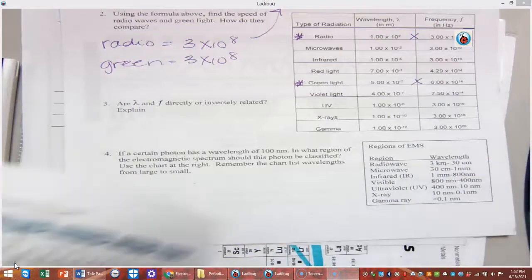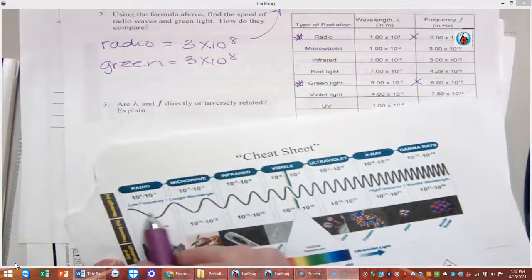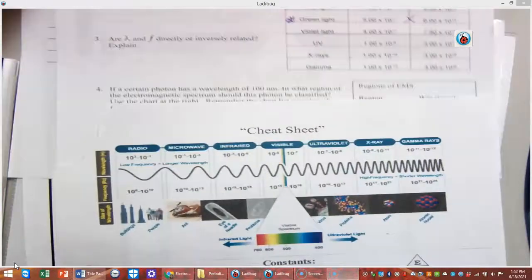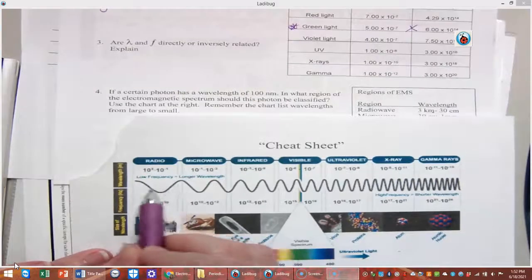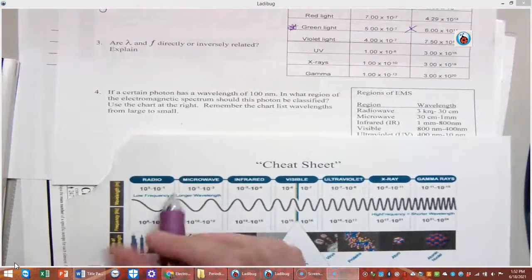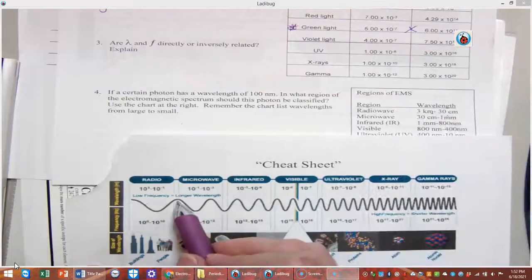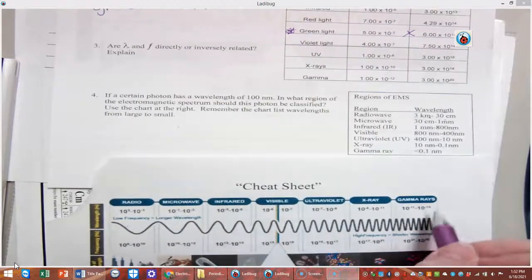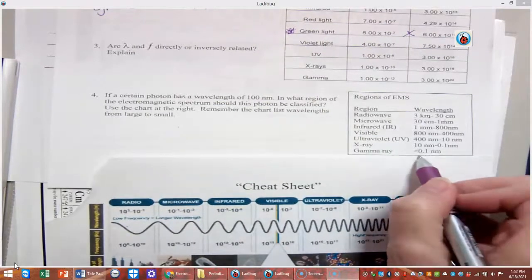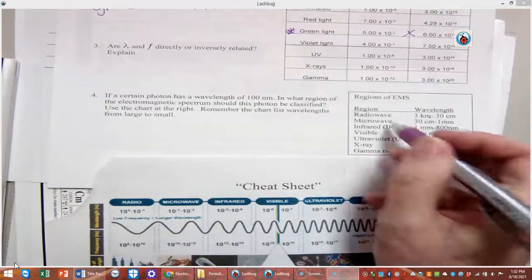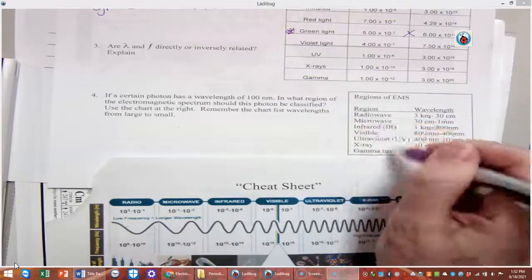Notice it goes all the way from 3 kilometers, which would make sense, because down here, notice we have our long wavelengths. Long wavelengths are down here, so these go from 3 kilometers all the way to 30 centimeters, all the way up to gamma, which are tiny, less than 0.1 nanometers. So where does 100 nanometers fall? Figure out which part of the spectrum that would be and put that there.